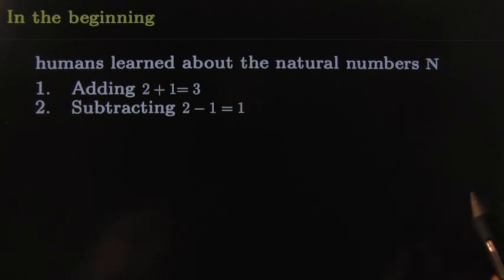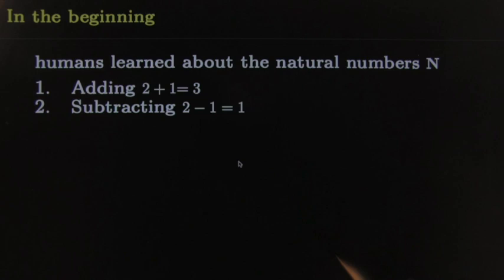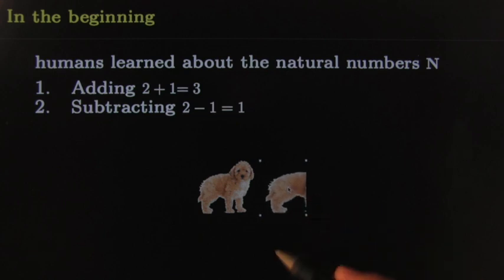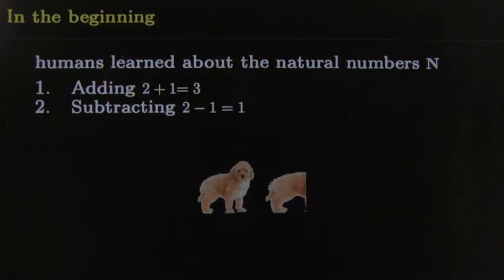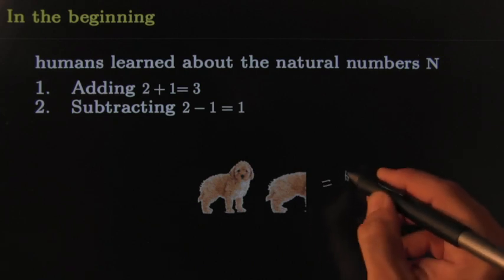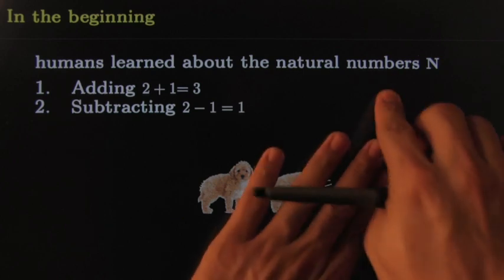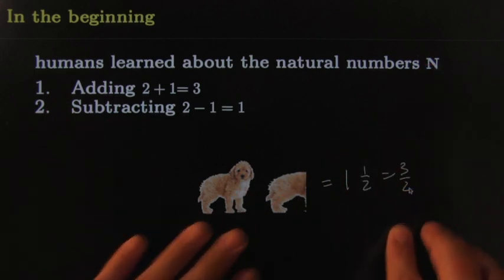Even subtracting was easy — just saying two dogs, you take away one. People started looking at these numbers and it wasn't a big deal. You could even take a dog and take maybe half a dog, and it wouldn't be a problem. People even learned to do half dogs, so you could say this is equal to maybe one and a half, or three halves dogs. Even those numbers — they weren't natural at the beginning, but people began to learn them. These would be called rational numbers.